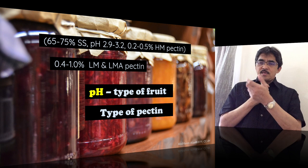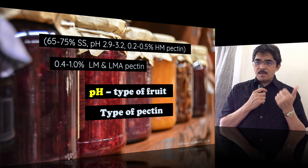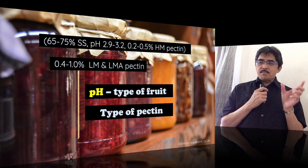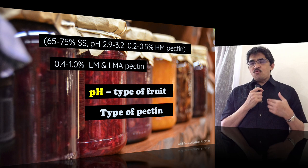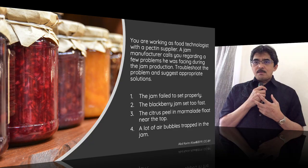You need to consider the pH of the fruits and the jam, then choose whether to use rapid set or slow set pectin. The type of pectin depends on the degree of esterification for high methoxyl pectin, along with the required amount of soluble solids and pH range. Low methoxyl and low methoxyl amidated pectin are more suitable for low-sugar products because they only need calcium to form a gel.